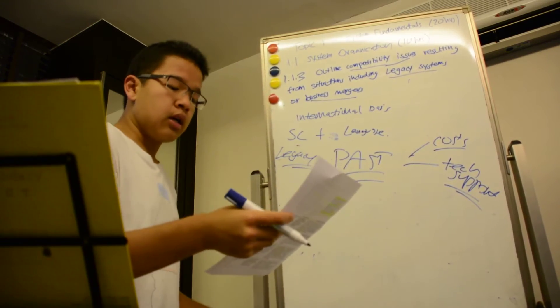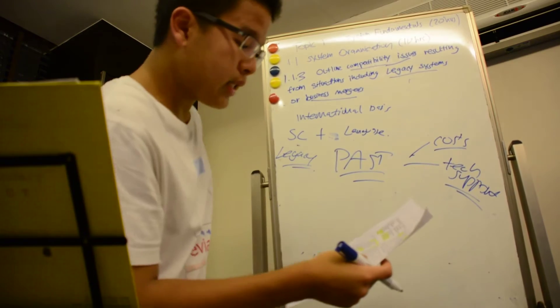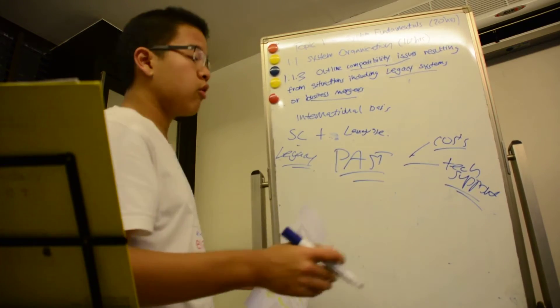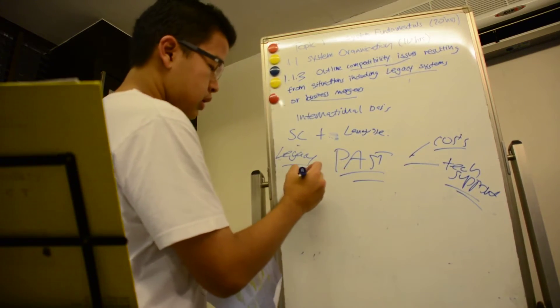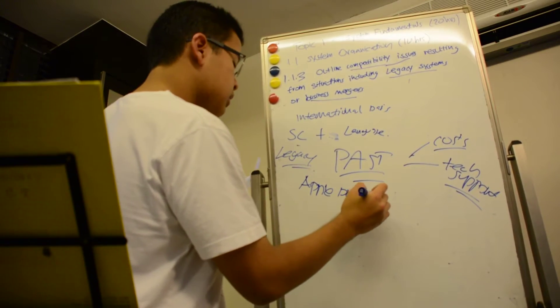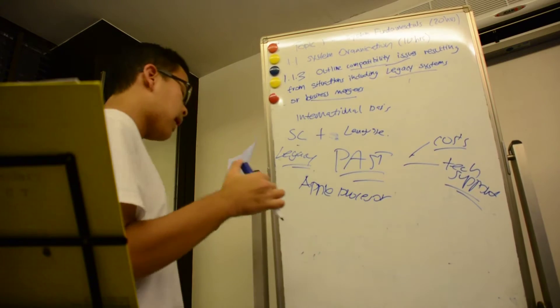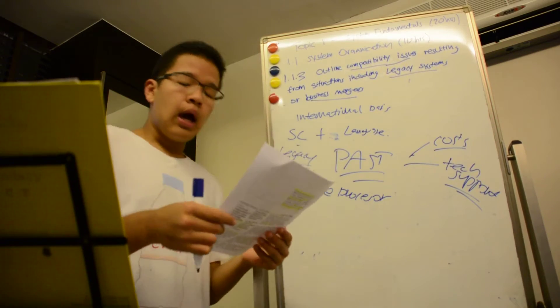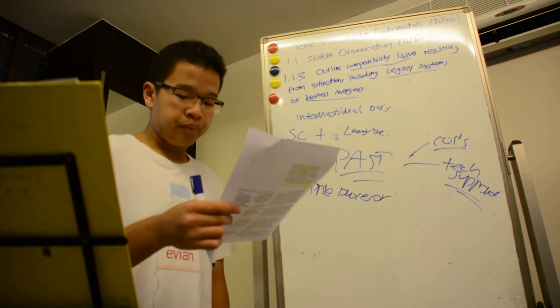So a good example of this is before 2006, Apple computers used Motorola processors. However, this meant that PCs and Macs were incompatible at the hardware level. So that's a legacy system.